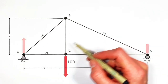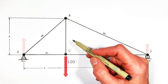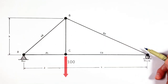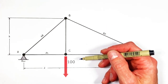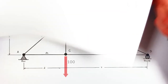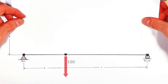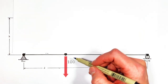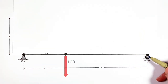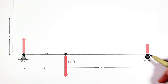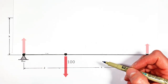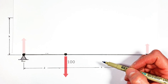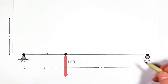The nice thing about trusses is that the reaction forces have nothing to do with the shape of the truss. Imagine we got rid of most of this truss so we're only left with a board loaded off to one side. The reaction forces on this board are going to be no different than the reaction forces on our original truss.